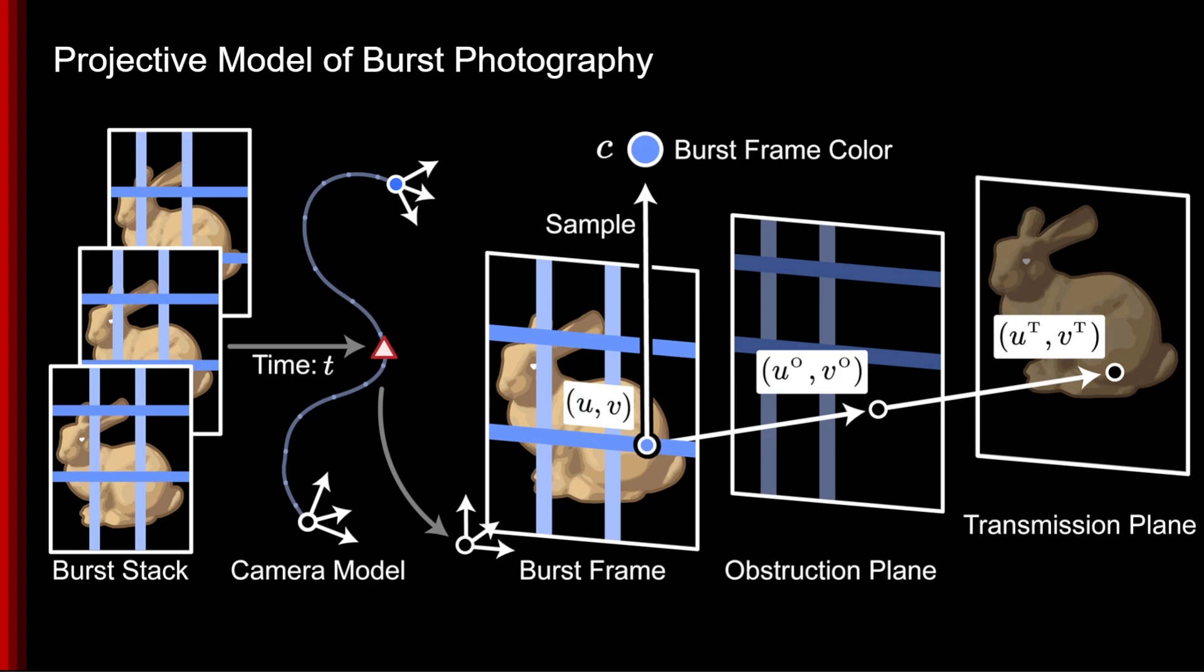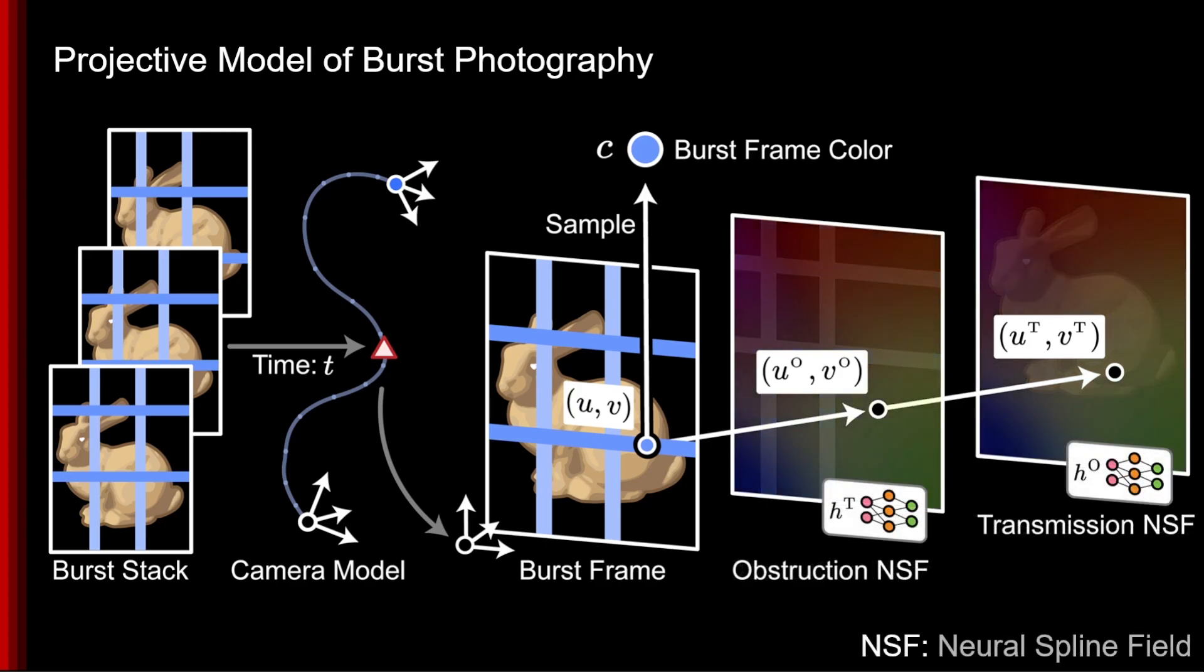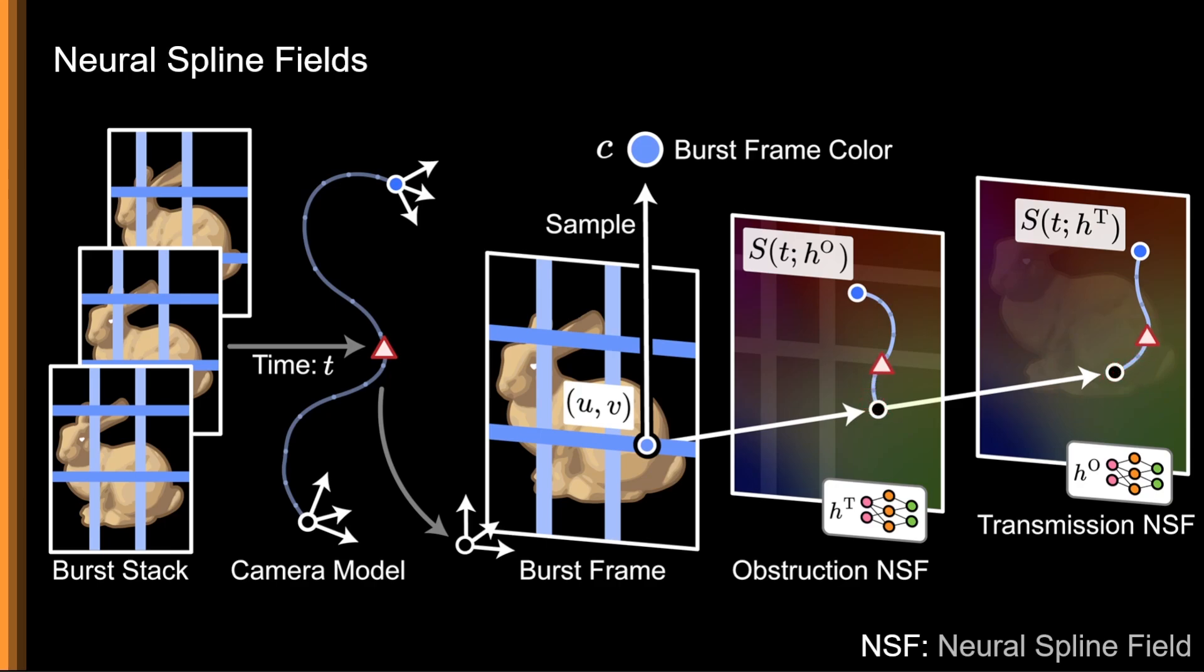However, while this two-plane model can compensate for some parallax effects, we're missing a granular representation of depth and motion in the scene. This is where we introduce neural spline fields, compact and versatile optical flow models backed by neural field representations. Each point on these planes maps to a flow vector, which shifts the ray intersection to correct for these other motion effects.